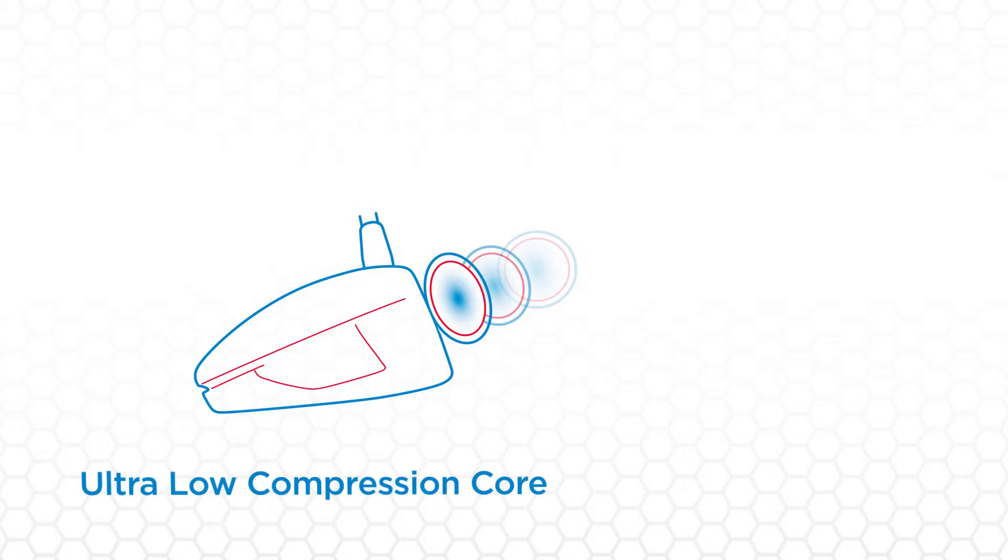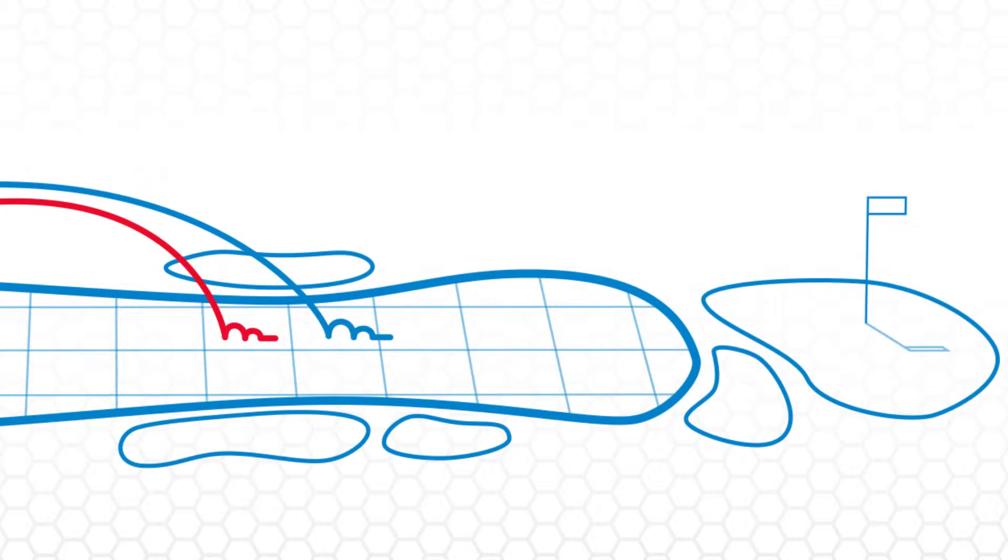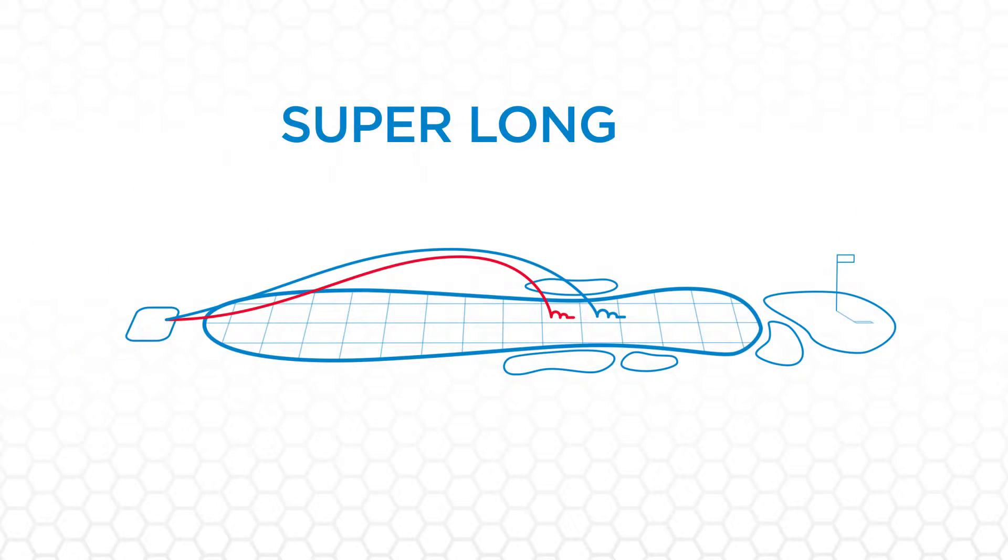The soft compression of this ball, what it does is when you hit it with your longer clubs like your driver, your fairway wood, your long irons, the ball deforms upon impact and that deformation reduces the amount of torque that's put on the ball, so it reduces driver spin and the reduced driver spin results in increased distance.